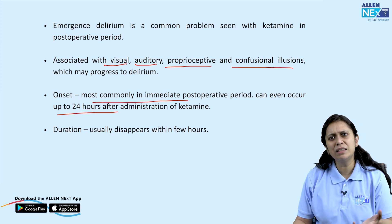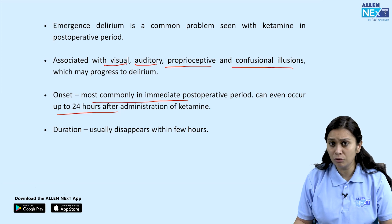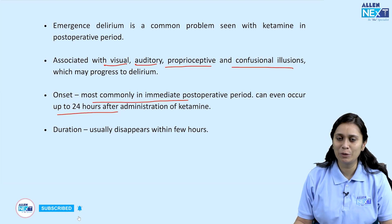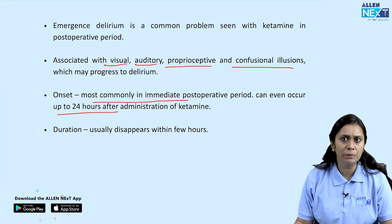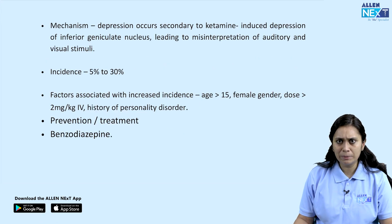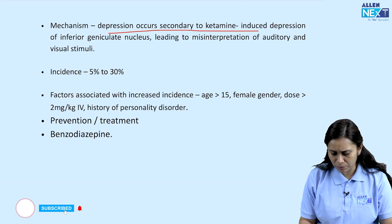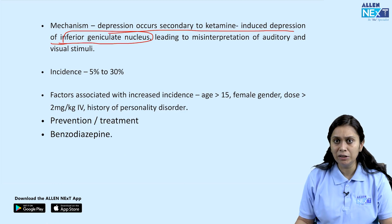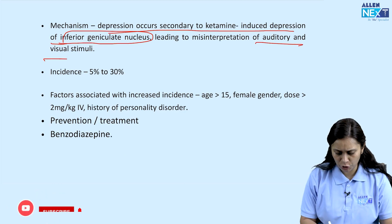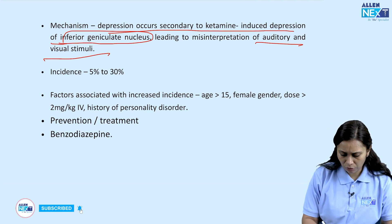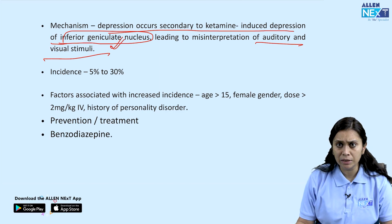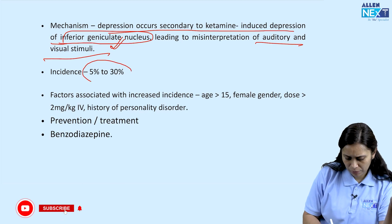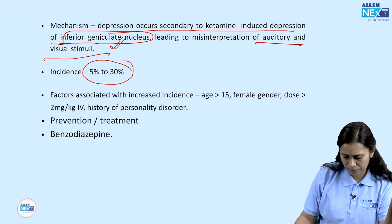Emergence delirium is a self-limiting condition that disappears in a few hours, so it's not something very alarming — though relatives of the patient can become very alarmed by the behavior. The mechanism is that delirium occurs secondary to ketamine-induced depression of the inferior geniculate nucleus, leading to misinterpretation of auditory and visual stimuli. Incidence is 5 to 10 percent.